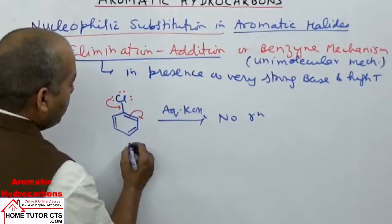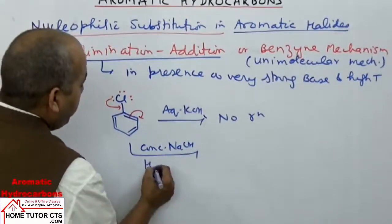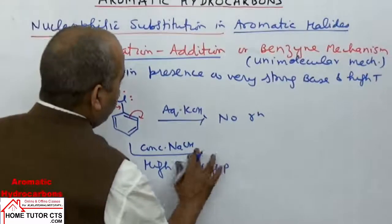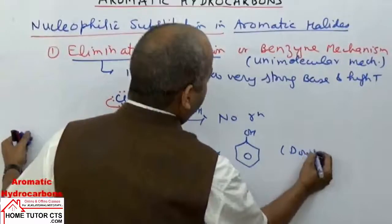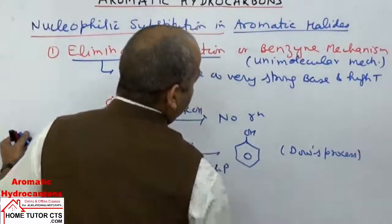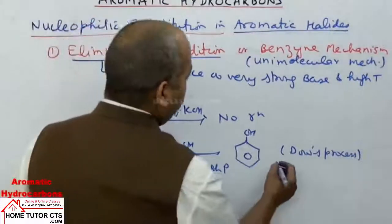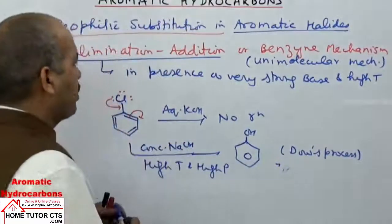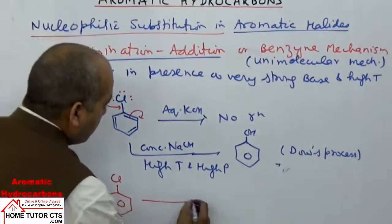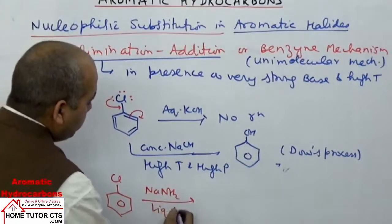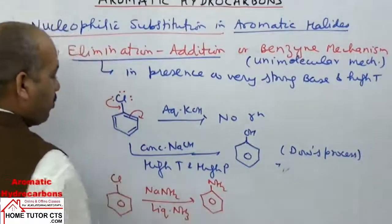However, reaction can take place using fused or concentrated NaOH or KOH at high temperature and high pressure. This gives a phenol product, and this process is called the Dow's process, where the hydroxide ion replaces the chlorine by the benzyne mechanism. Another example: chlorobenzene reacting with NaNH2 in liquid ammonia gives an NH2 group on the benzene ring, also following the benzyne mechanism.